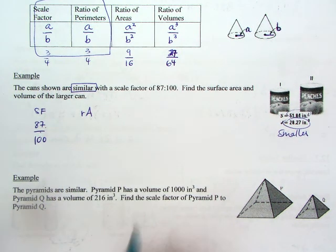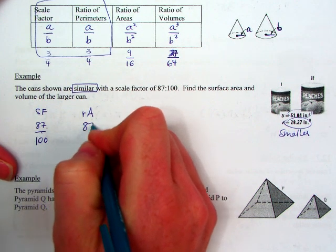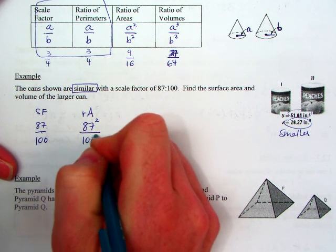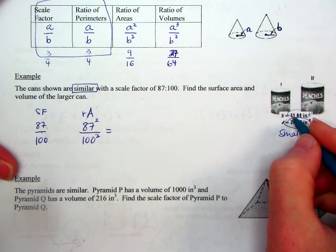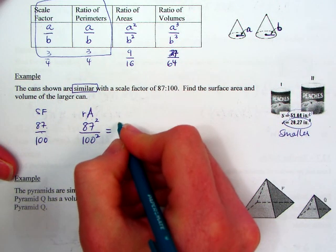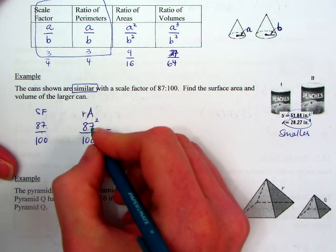So our ratio of areas, we'll square those. So I'd have 87 squared and 100 squared. And so for us to find the surface area, I'm just going to take our 51.84. And that's for the smaller can. And right now we're going small to big.